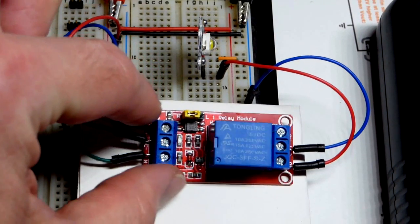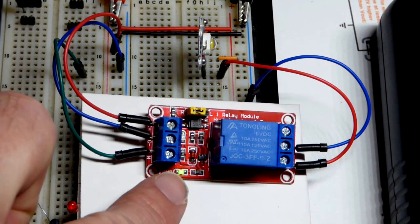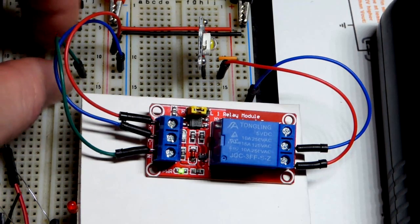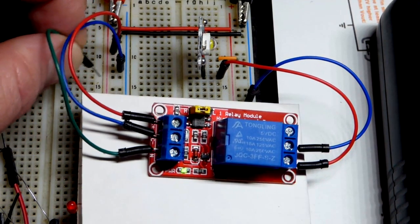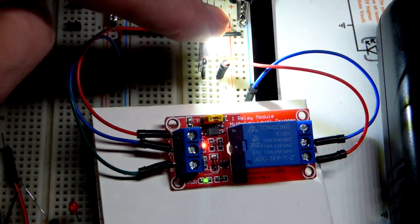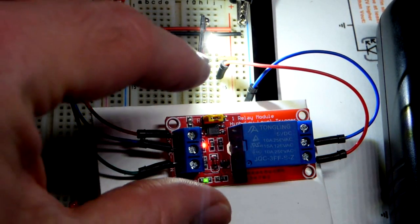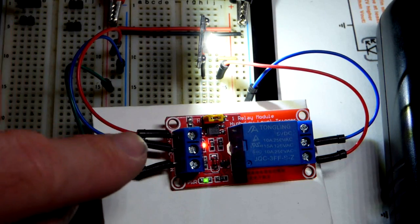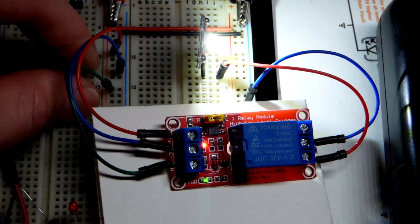So now in this video we're going to look at a relay module I have here. A little bit of current is being used right now because we've got to light that LED. But in any case, we switch an electrical circuit there with a mechanical switch. But the mechanical switch is controlled by an electric signal.